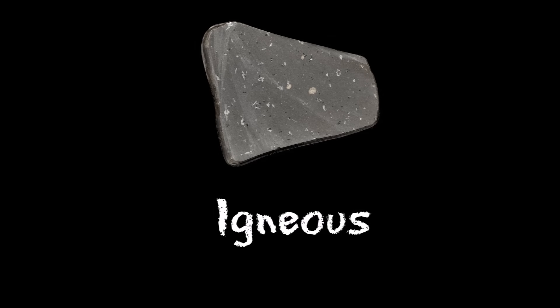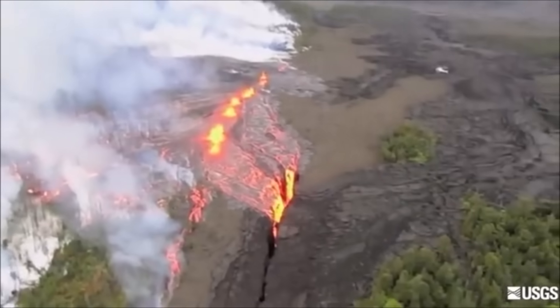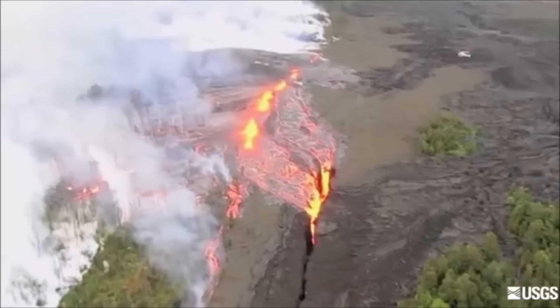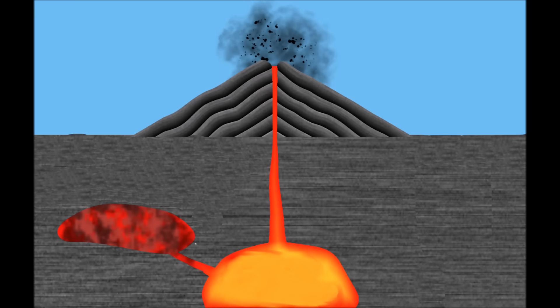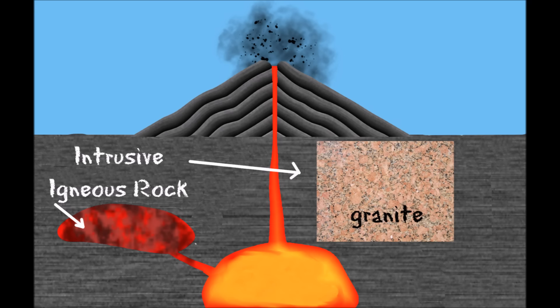Igneous is a word that means fiery. Igneous rock is formed when magma or lava cools. Sometimes magma cools slowly underneath the earth's surface. This forms intrusive igneous rock, like granite.